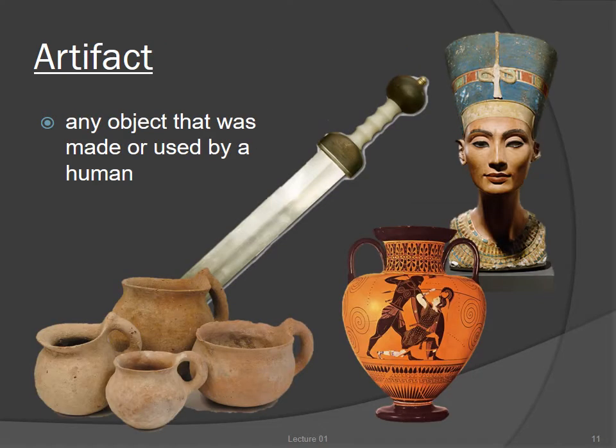There are four basic types of evidence that make up the archaeological record. The first and most basic is the artifact — any object that was made or used by a human, and usually used specifically for portable objects.